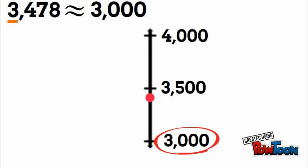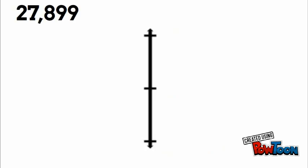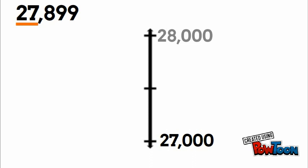Twenty-seven thousand eight hundred ninety-nine — we're rounding to the nearest thousand. We still include the twenty-seven, so our lower estimate is twenty-seven thousand. Our upper estimate is one more, so twenty-eight thousand. Our midpoint will always be with a five, so twenty-seven thousand five hundred.